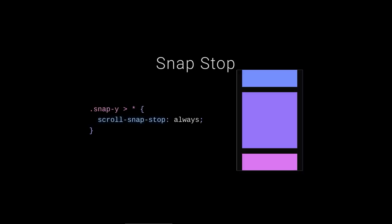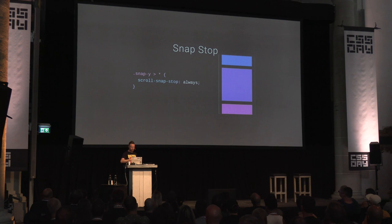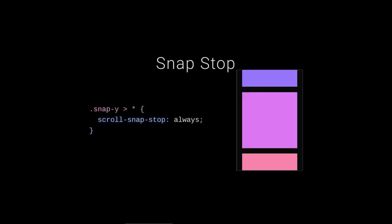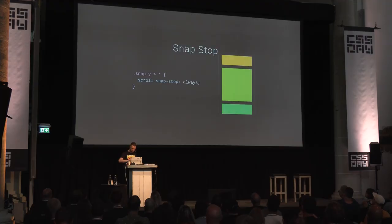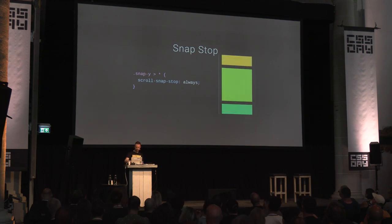Now let's talk about scroll-snap-stop. This is like telling a snap point that it is a very important destination — like you have to stop in Chicago on a trip from New York to LA. You target a child and say scroll-snap-stop: always. As I scroll, the browser says 'I have to stop on the next item.' I'm flicking in a way that should go quick, but it snaps on each child. I can however scroll past items manually — I'm the driver.